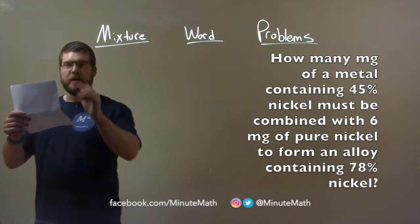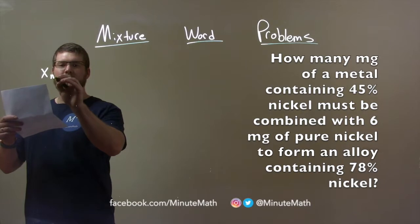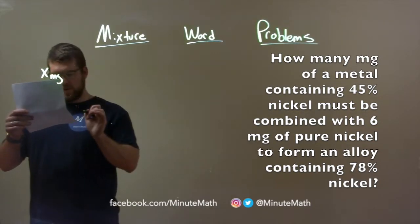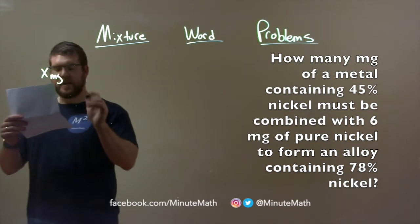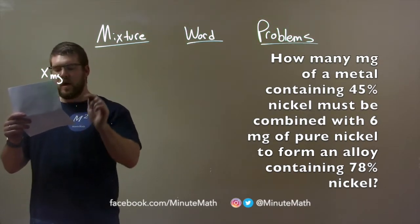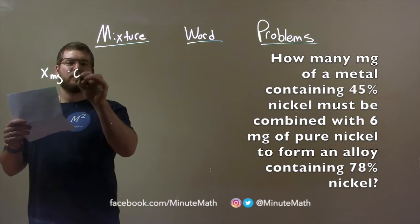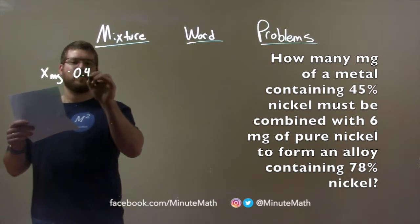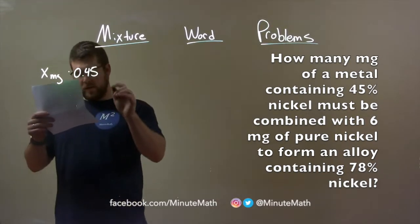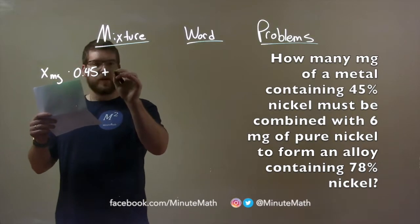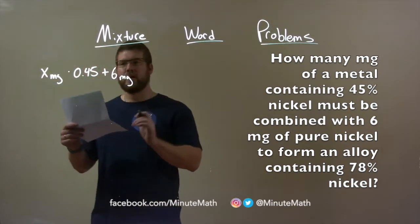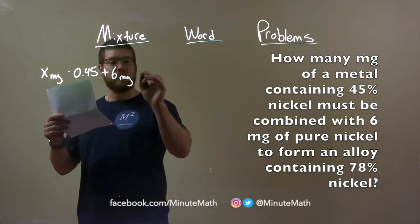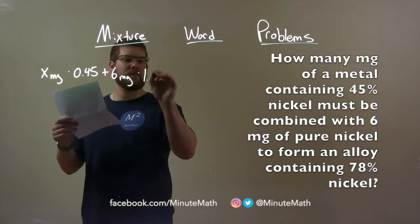We start with the first thing here. We have X milligrams, we don't know how much of metal containing 45% nickel. Whatever that total first thing contains 45% nickel, so multiply that as a decimal, 0.45. Then it's combined with 6 milligrams containing pure nickel. That percent is actually 100% or as a decimal, 1.00.